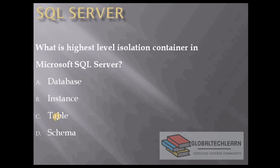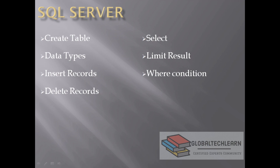You have four options: database, instance, table, and schema. We have already covered this in our last video. If you have not gone through that, I will provide a link in the description — go through that and try to answer in the comment section, and I will give a heart to the correct answer. In today's session we are going to learn how to create a table, what are the different data types, and how to insert or delete data within a table.